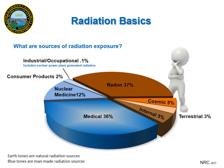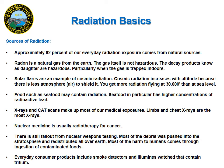On this slide I have a chart showing different sources of radiation exposure. The earth tones are the natural sources and the blue tones are man-made sources. Every day we are exposed to several different types of radiation. Approximately 82 percent of our everyday exposure comes from natural sources such as radon, cosmic, and terrestrial radiation. Radon is the number one source of radiation exposure.